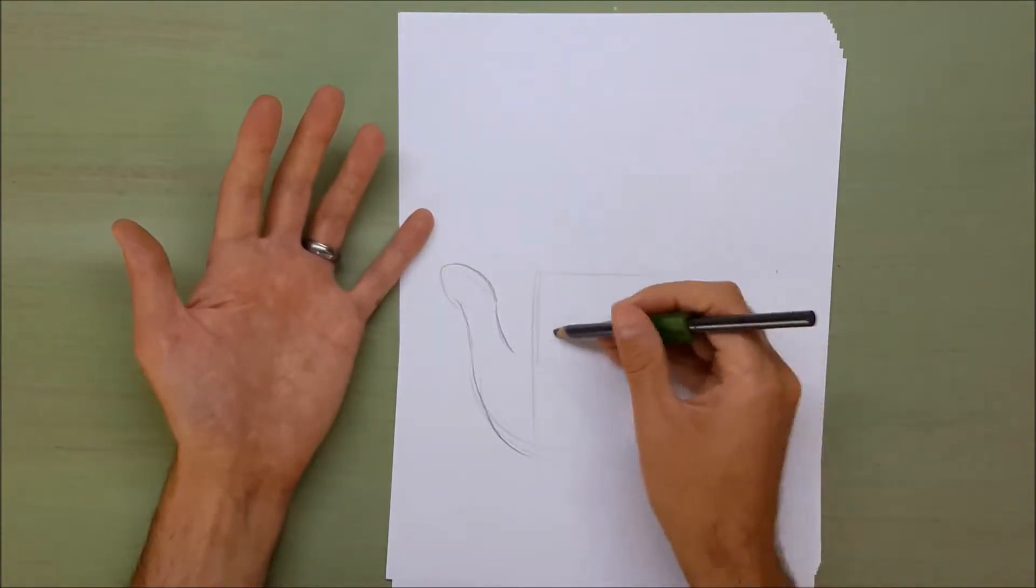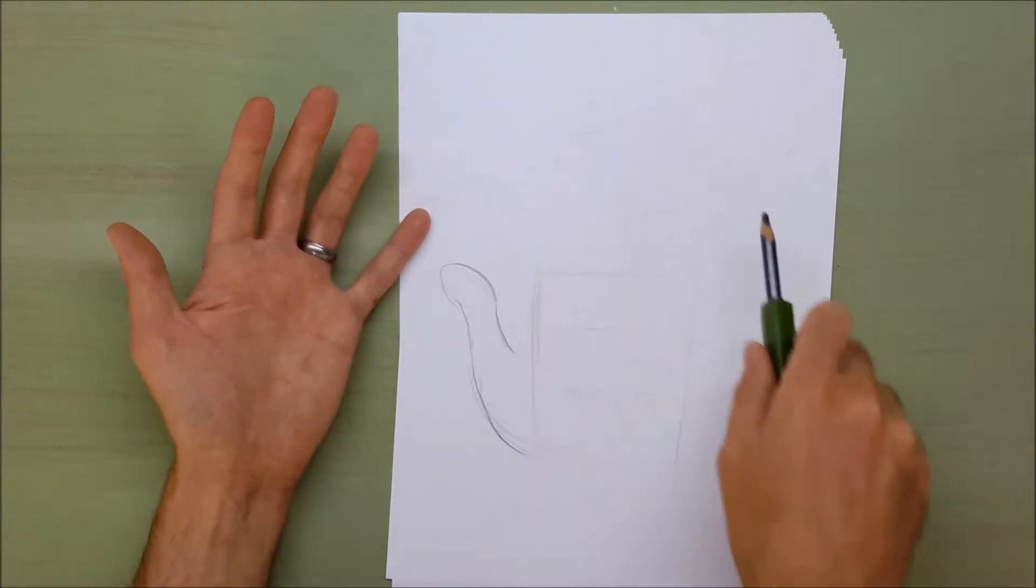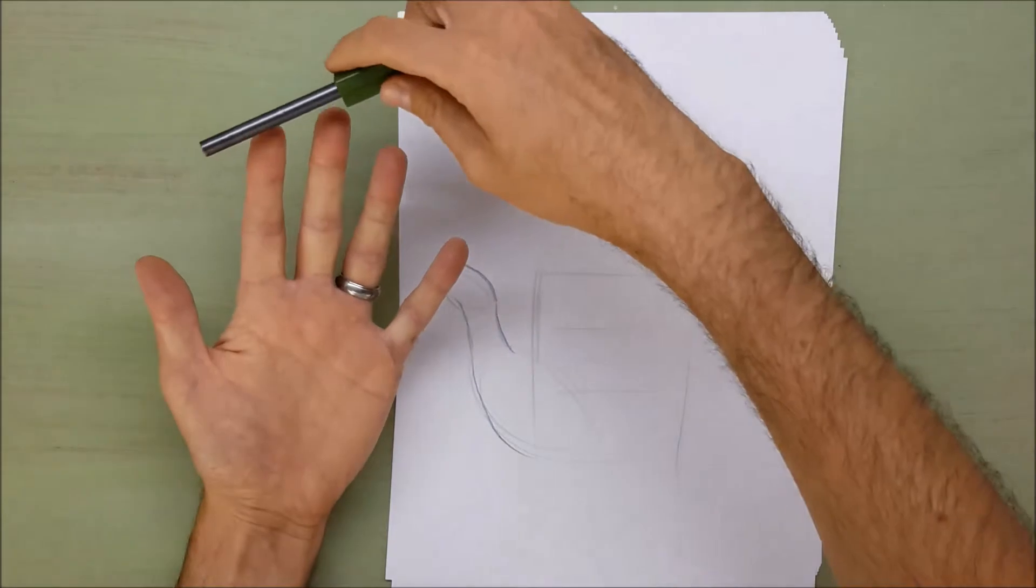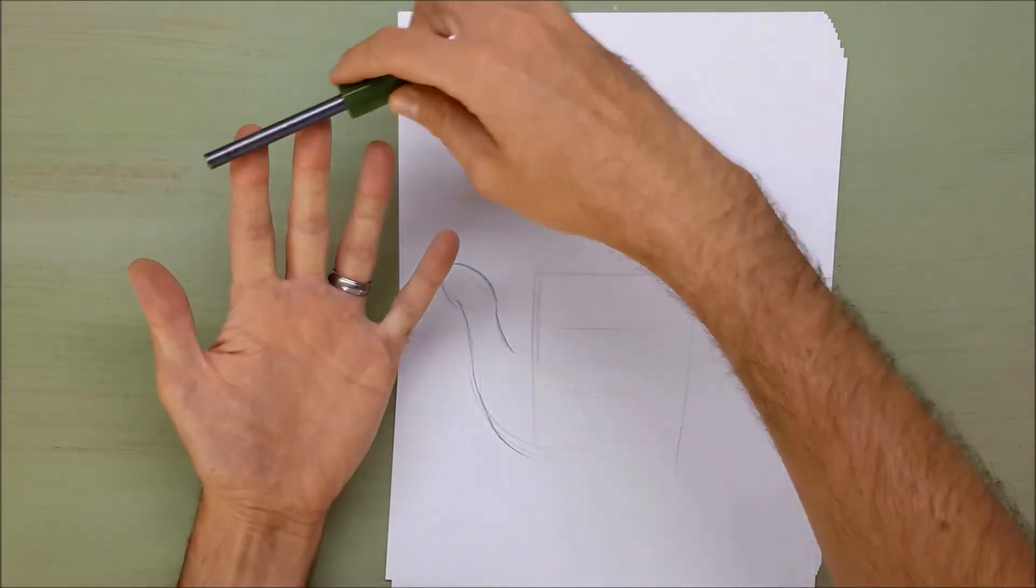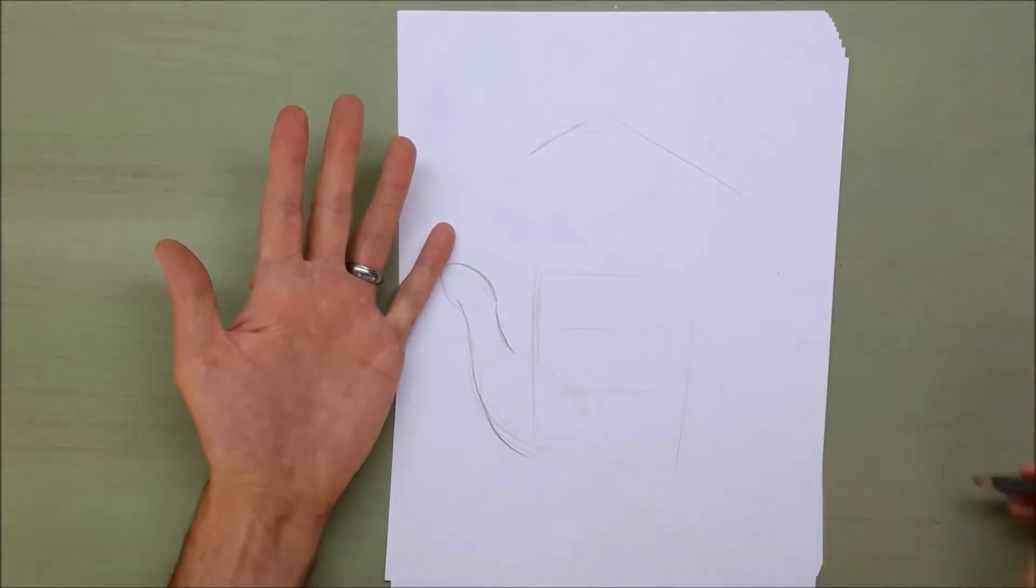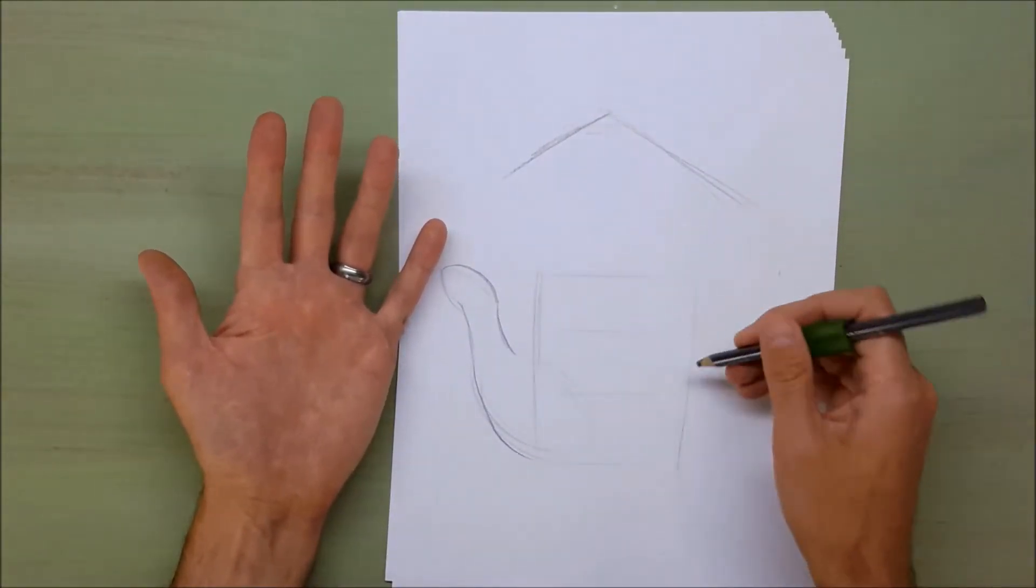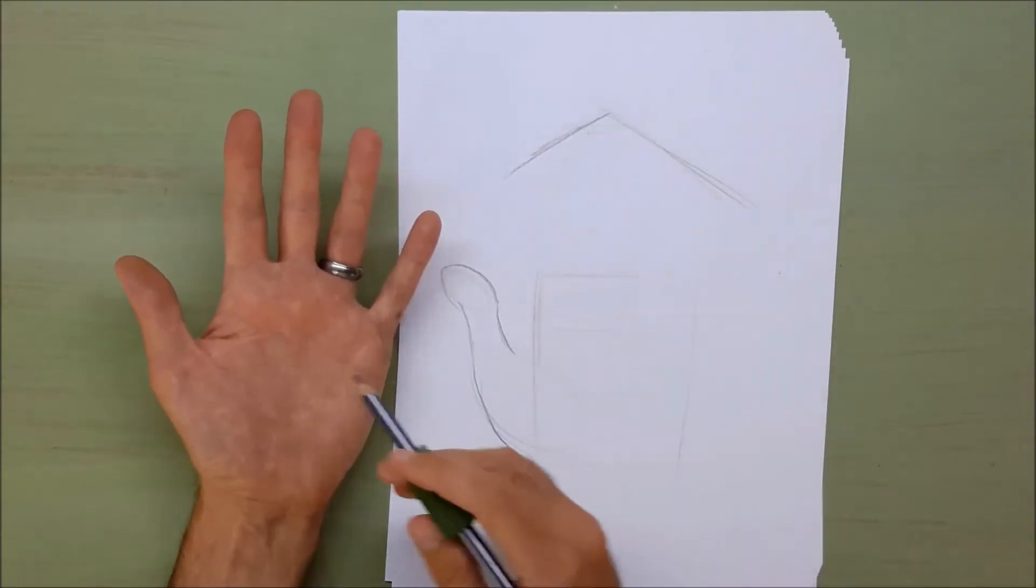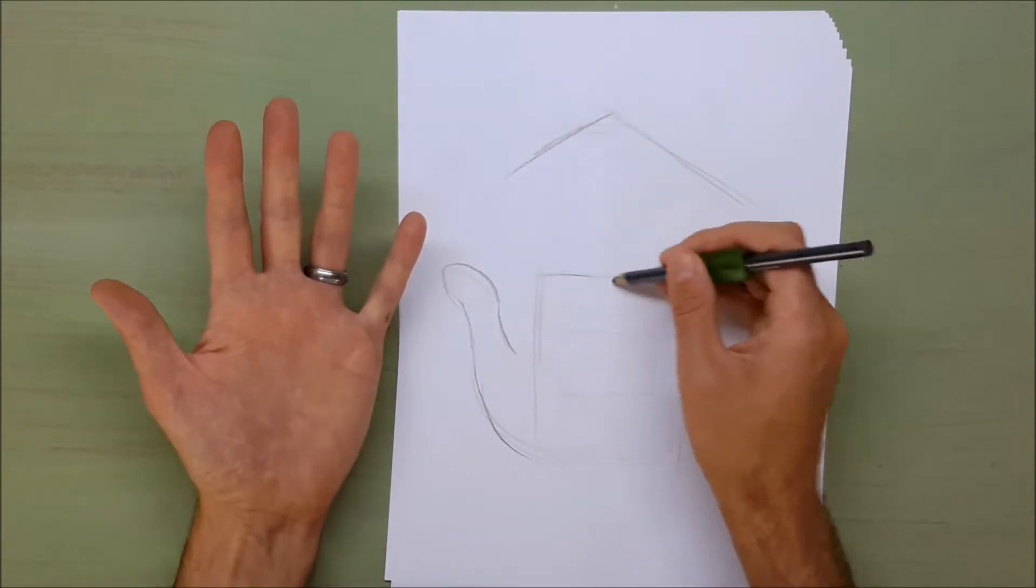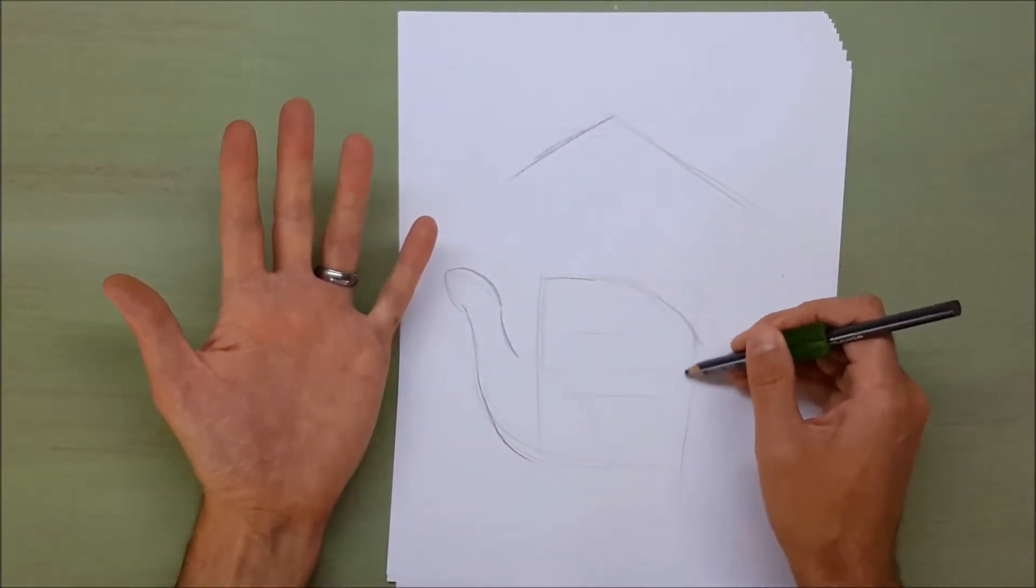So about two-thirds of the palm is what we'll do for our fingers. Now you'll notice that the fingers kind of come up and then down, so I'm just going to indicate that by putting some lines in. I also want to fix this palm. It's not a perfect block.